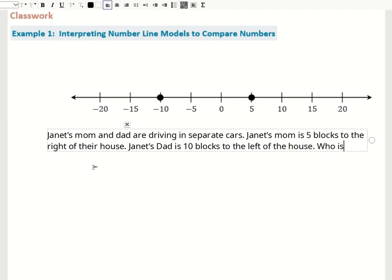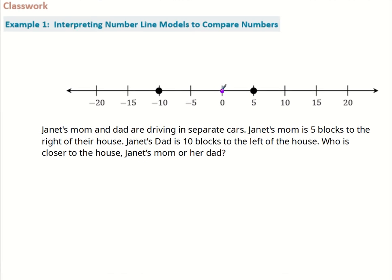Janet's dad is 10 blocks to the left of the house. Who is closer to the house — Janet's mom or her dad? We can use the number line where point zero represents Janet's house. Five blocks to the right is Janet's mom, and 10 blocks to the left is her dad. We can easily see that Janet's mom would be closer to the house than Janet's dad.